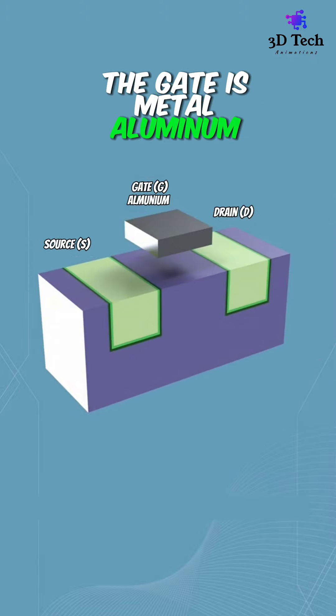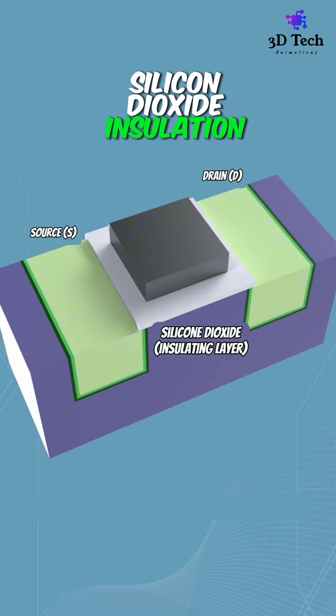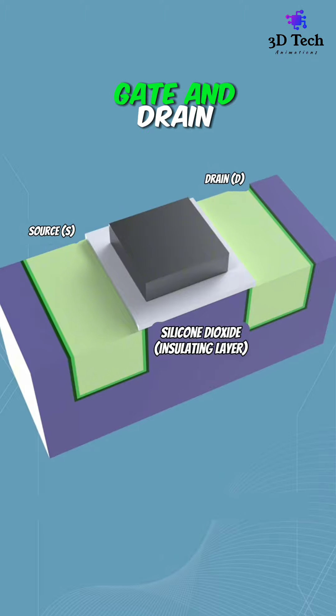The gate is metal aluminum. Silicon dioxide insulation is used between source, gate, and drain.